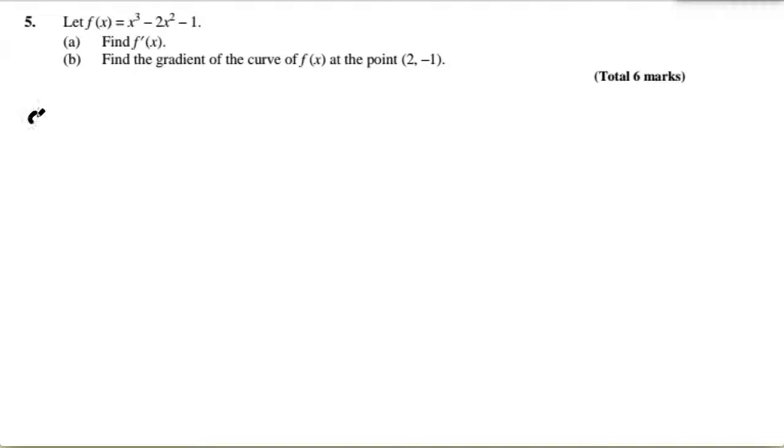For part a, it's asking for the derivative. The derivative of that would be 3x squared minus 4x, and the constant would just become 0. That's your answer.